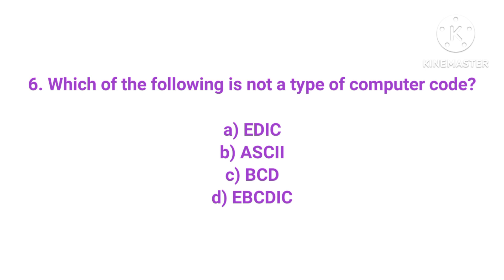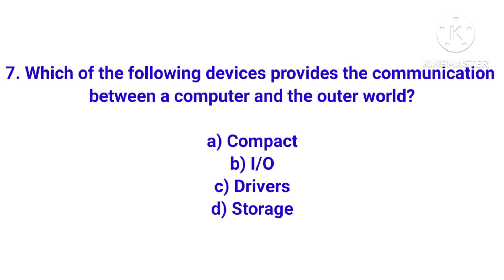Next: which of the following is not a type of computer code? Options are ADIC, ASCII code, BCD code, or ABCD IC. You may have heard of ASCII and BCD (Binary Coded Decimal). There is confusion between ADIC and ABCD IC. Knowing full forms will help. The correct answer is ADIC — option A — which is not a valid computer code.